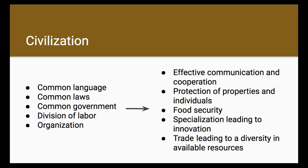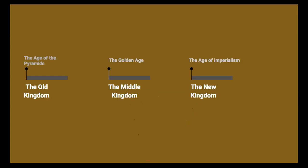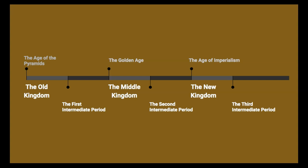The earliest evidence of a unified Egyptian civilization dates back to around 3100 BCE. Artifacts reveal the pharaoh Narmer, or Menes, wearing the crown of both Upper and Lower Egypt combined, dating back to that period. Ancient Egyptian civilization can be split into three distinct periods: the Old Kingdom, the Middle Kingdom, and the New Kingdom. In between these periods were the intermediate periods, which were when the economy and leadership were least stable.